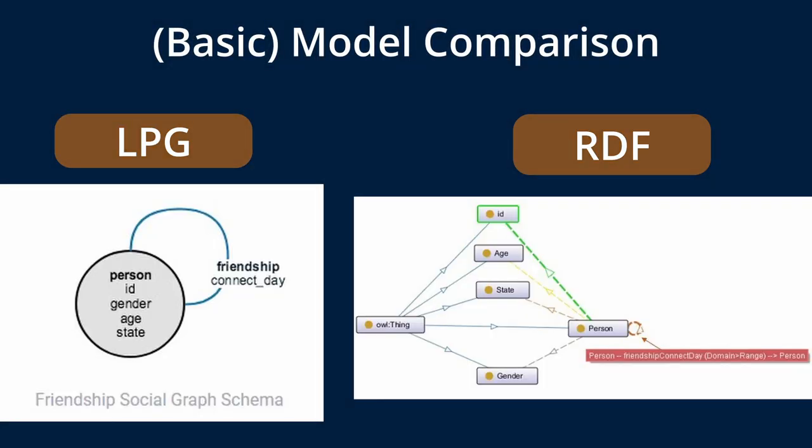Looking at the two models side by side, the property graph is much more simplistic, but the RDF model has a lot more granularity to what it is describing, which is why it's so great for inferencing. However, it has a very distinct drawback: the properties or relationships themselves cannot have any additional value added to them. So if I was friends with someone for a certain time period, there was no way in traditional RDF to express that. However, most linked data on the web is structured as RDF, which is a big reason why many people still use it.